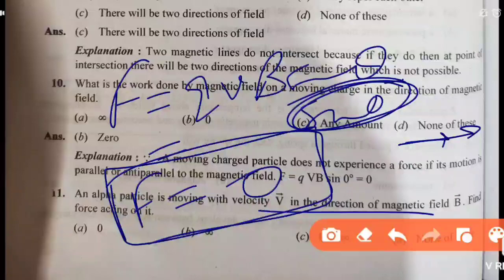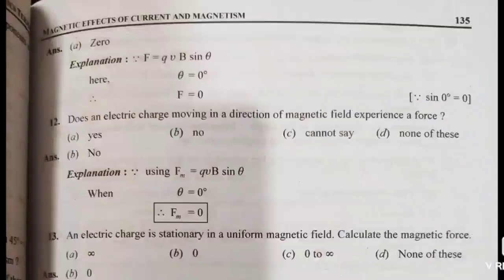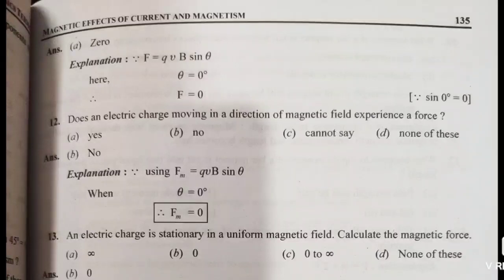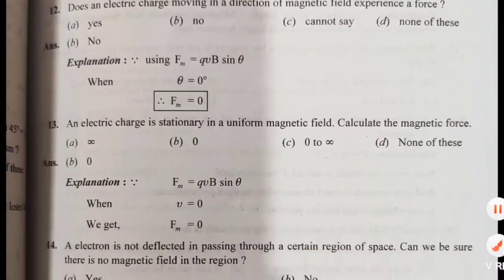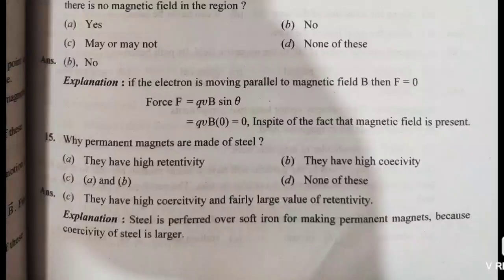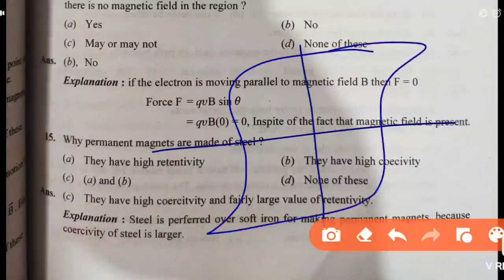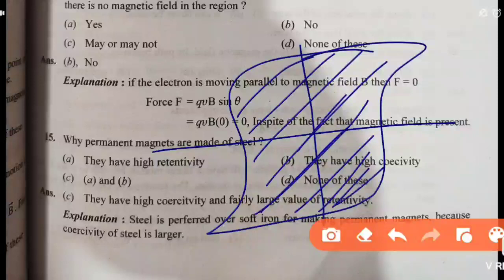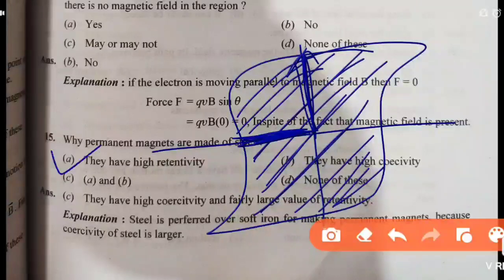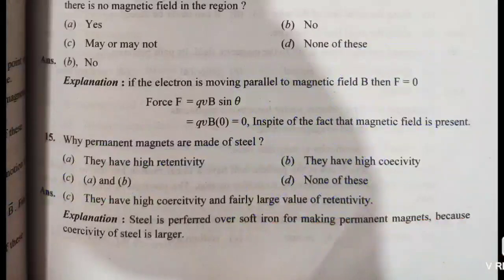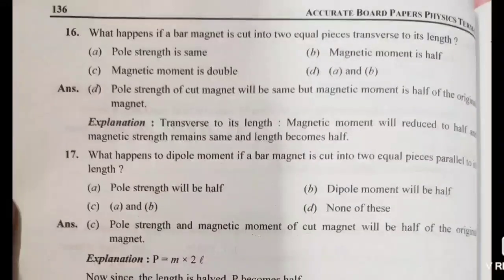Does an electric charge moving in the direction of the magnetic field experience a force? This is the same question as questions 13 and 14 — check those again. Next: why is a permanent magnet made of steel? Because steel has a larger hysteresis loop, meaning high retentivity and high coercivity. So both A and B are the right answer.